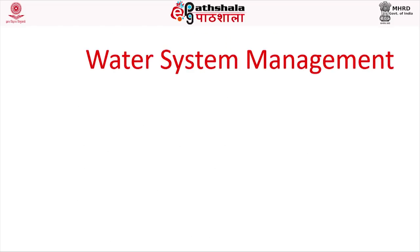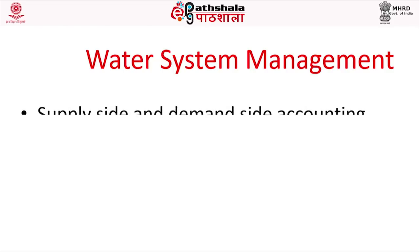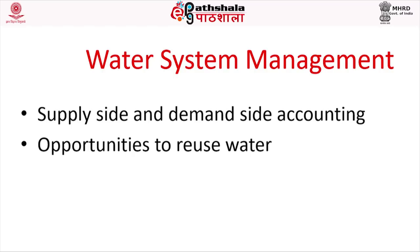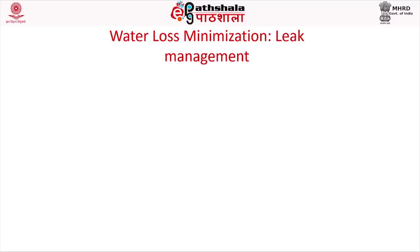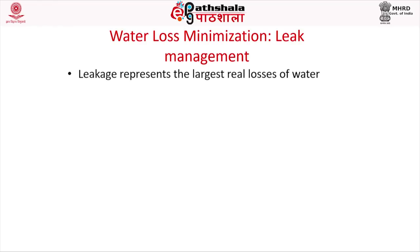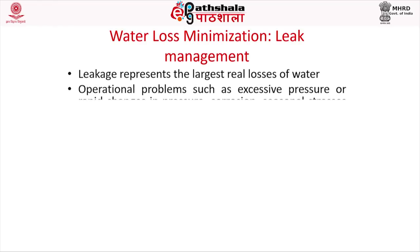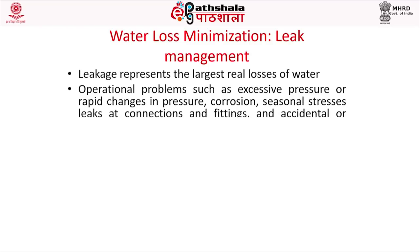Water system management involves supply side and demand side accounting, opportunities to reuse water, and the multi-tap supply system plan and plumbing systems. To minimize water loss through leak management, leaks represent the largest real loss of water. Operational problems such as excessive pressure or rapid changes in pressure, corrosion, seasonal stress, faulty side connections and fittings, and accidental or deliberate damage all contribute to leaks.